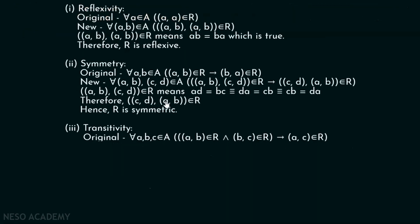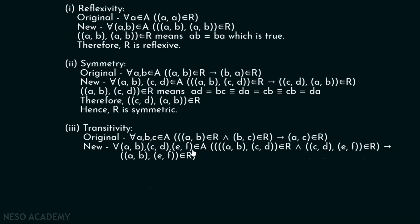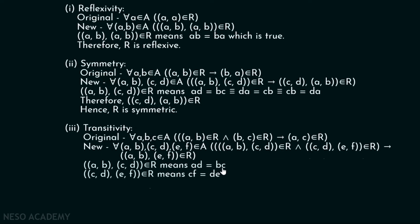Now let's see whether R is transitive or not. The original definition of transitivity: for all A, B, C in set A, if (A, B) in R and (B, C) in R then (A, C) in R. Replacing A by (A, B), B by (C, D), and C by (E, F), the new definition is: for all (A,B),(C,D),(E,F) in set A, if ((A,B),(C,D)) in R and ((C,D),(E,F)) in R then ((A,B),(E,F)) in R. ((A,B),(C,D)) in R means AD equals BC. ((C,D),(E,F)) in R means CF equals DE.